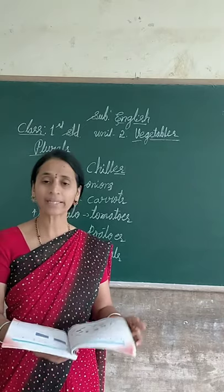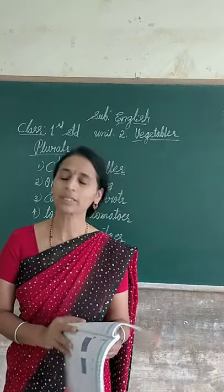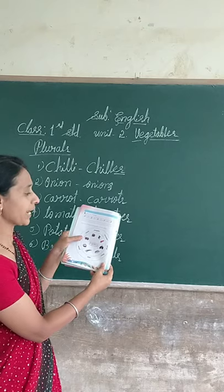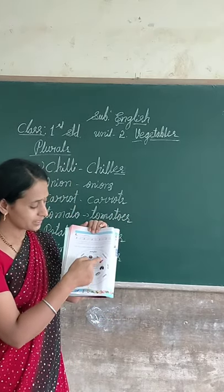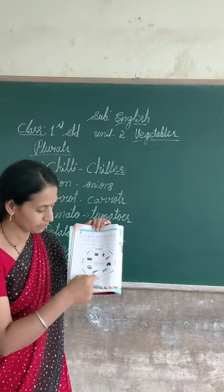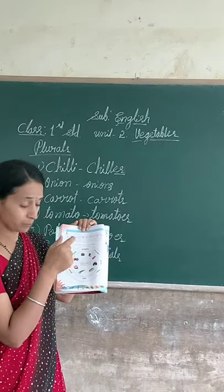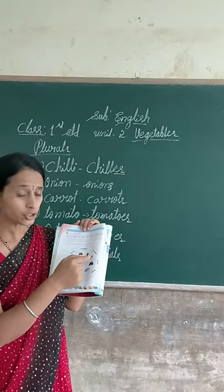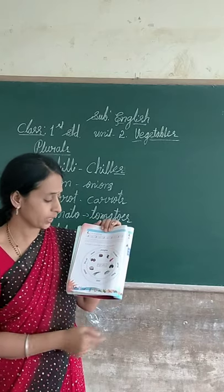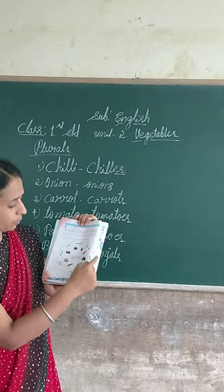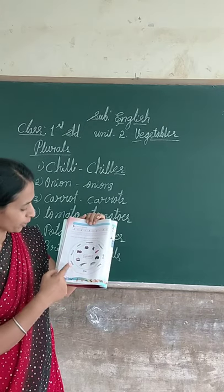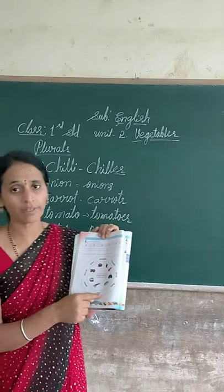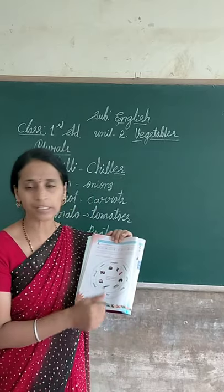Next, come to page number 36. That page has an activity. Draw lines to match the picture and the names. There are vegetable names in a circle and the vegetable pictures are also there. Match each vegetable picture to its name by joining a line. The vegetables are: pumpkin, cucumber, carrot, beans, chilli, potato, ginger, onion. This is also your homework.